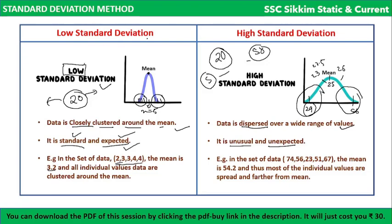For high standard deviation, consider data: 74, 56, 23, 51, 67 — five values. Calculate the mean: divided by 5, you get 54.2. Using mean 54.2, the value 74 is far and 23 is also far from the mean. That is why we call this high standard deviation. The more deviation, the more spread; the less deviation, the less spread.